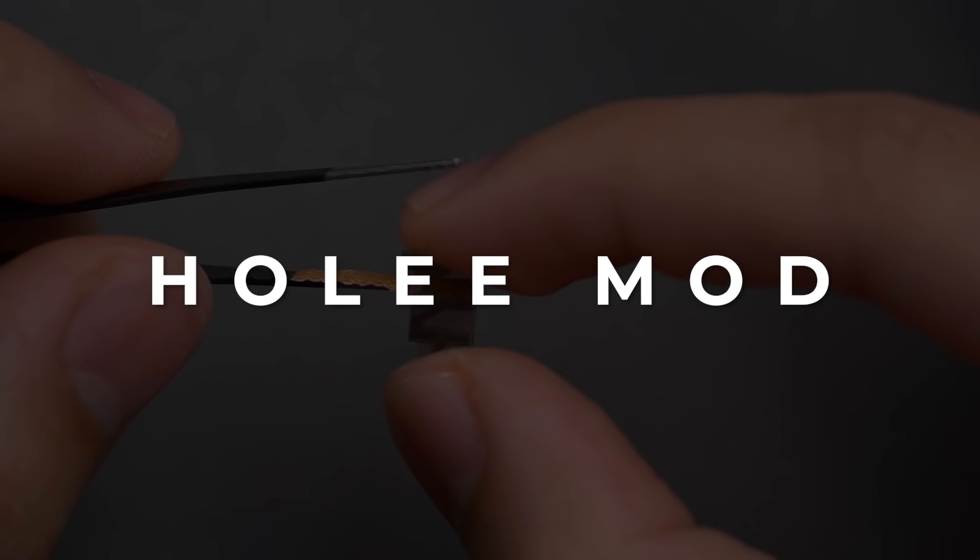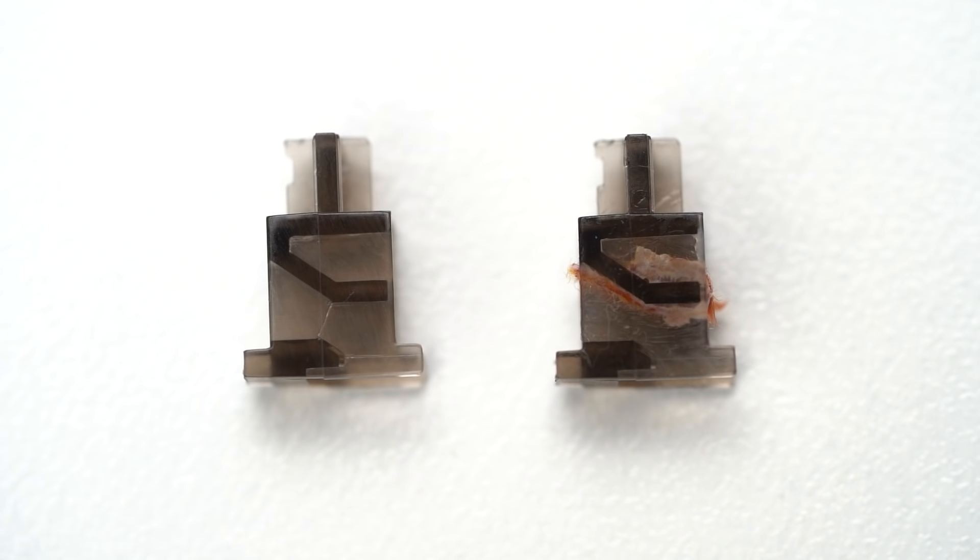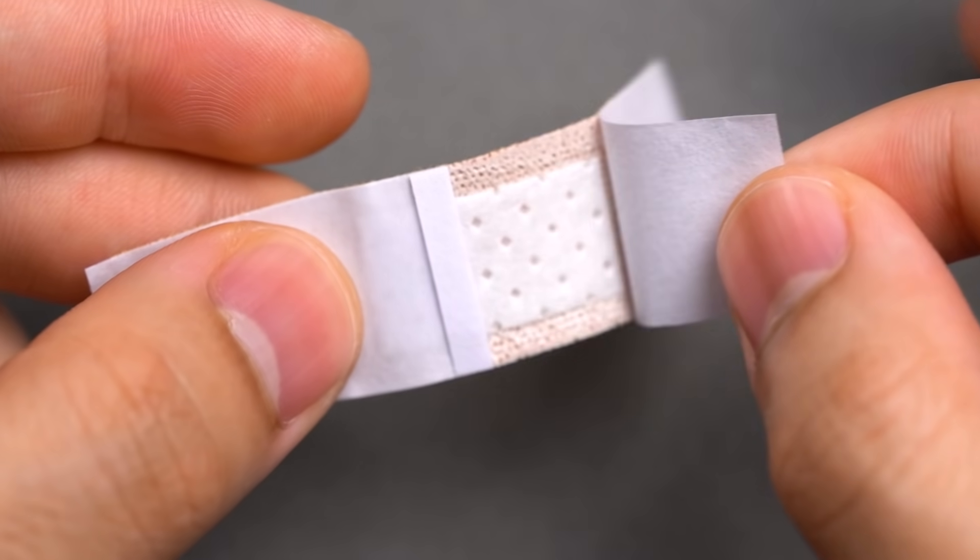So once your stabilizers are dry and are clipped, we can now move on to the holy mod. The main objective of the holy mod is to place a bandaid into the stabilizer stem to cushion the stabilizer wire and reduce rattle.